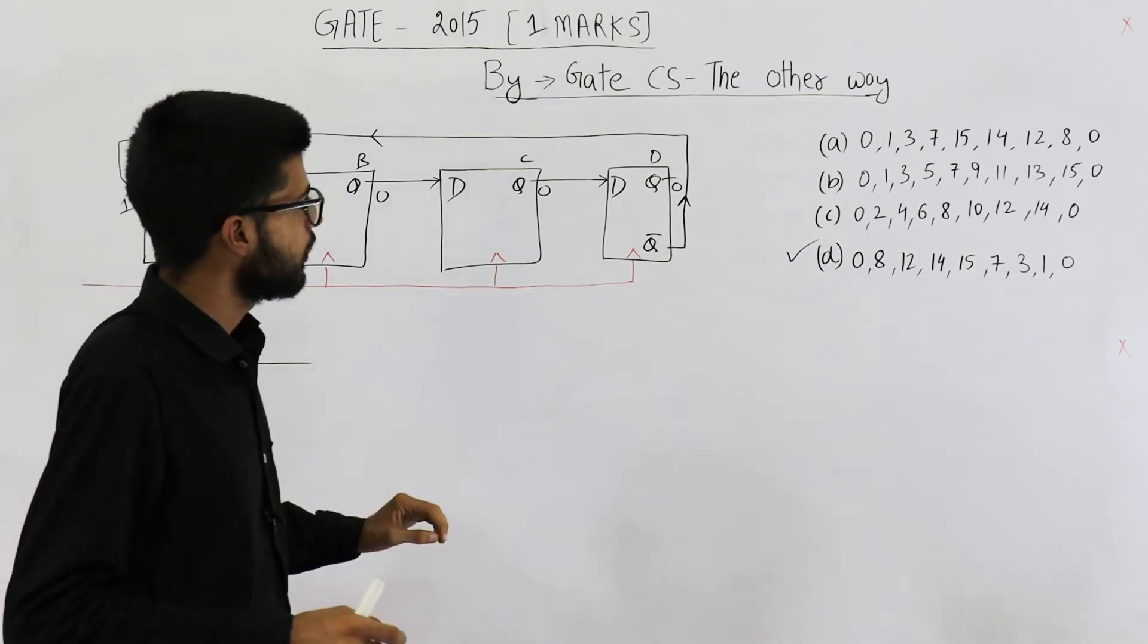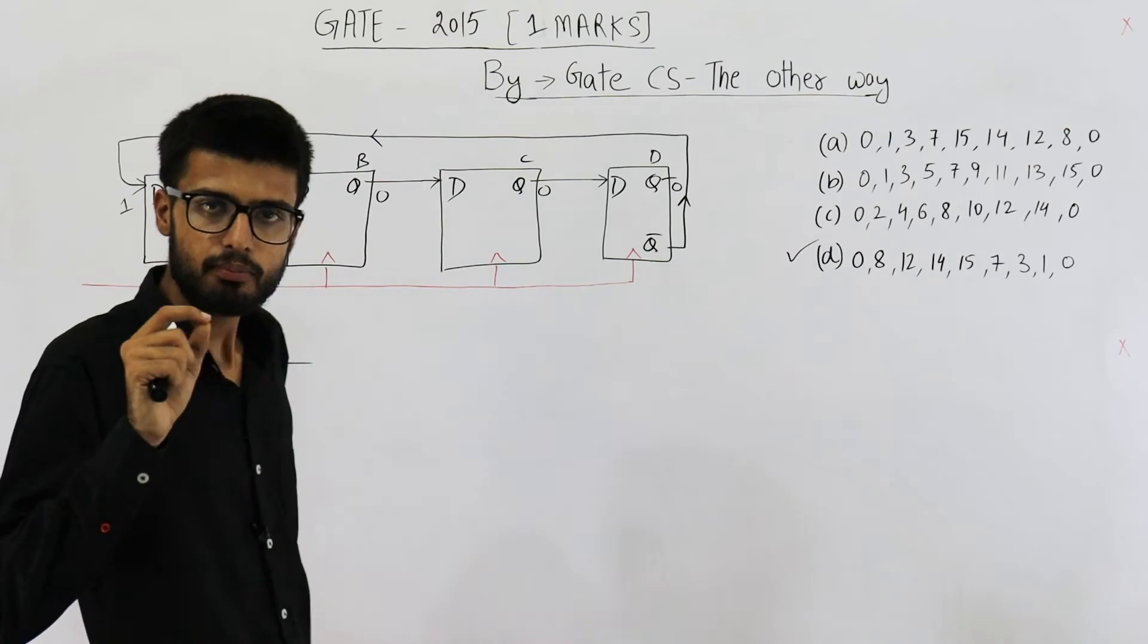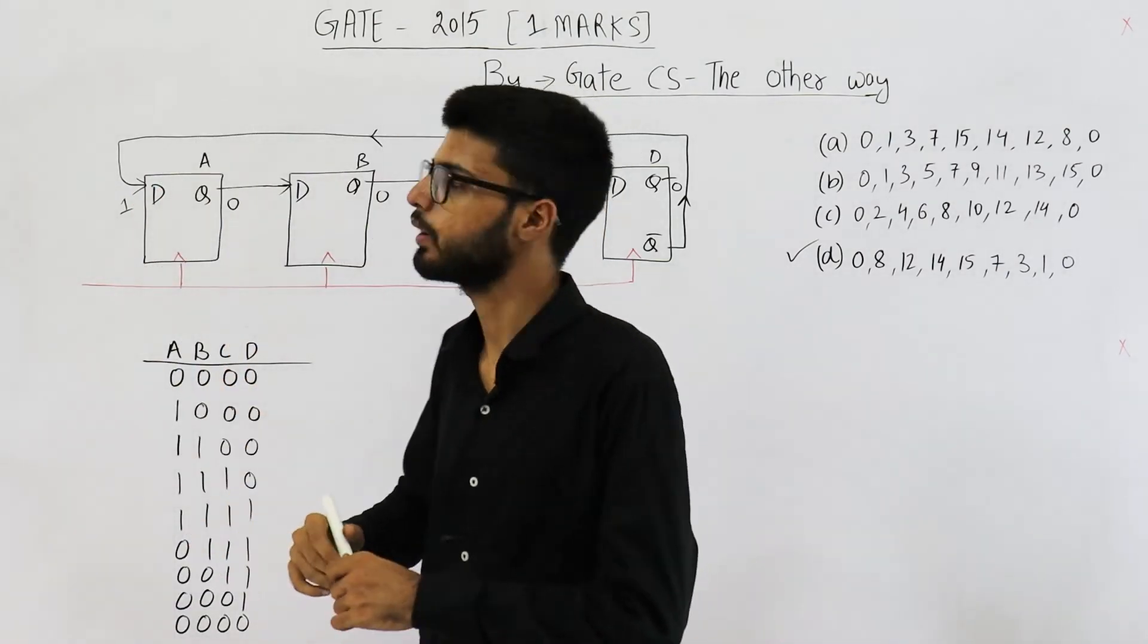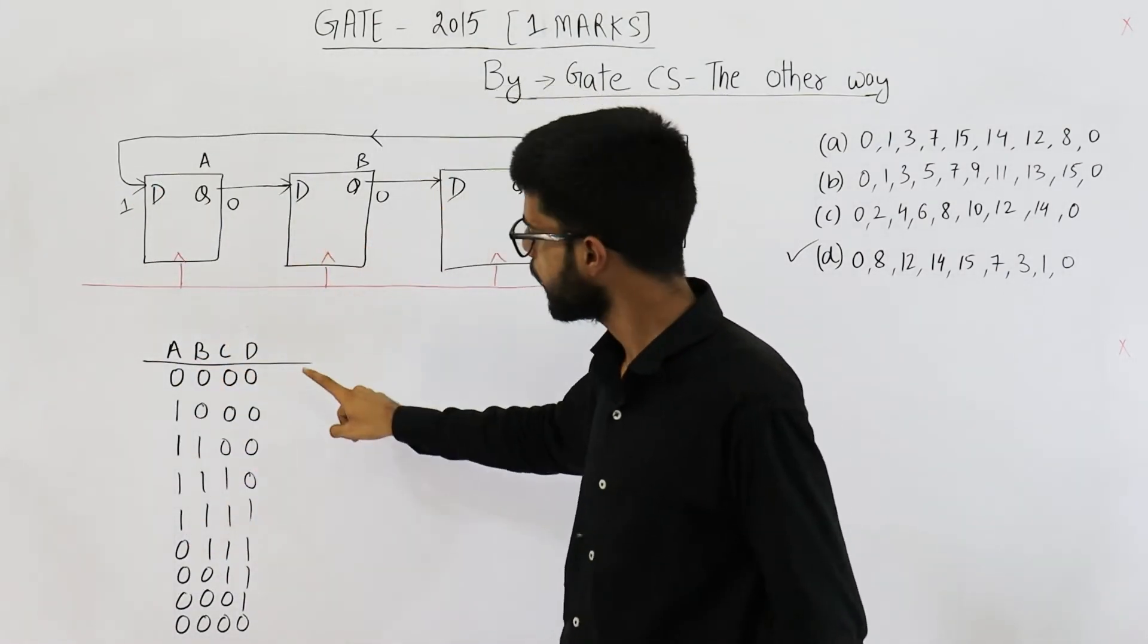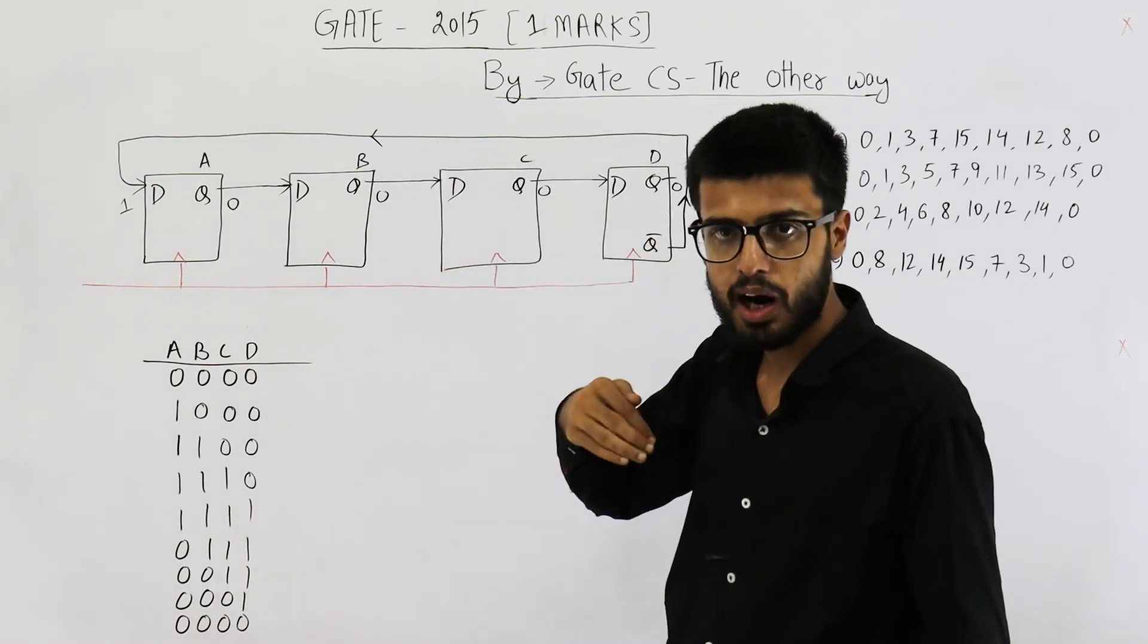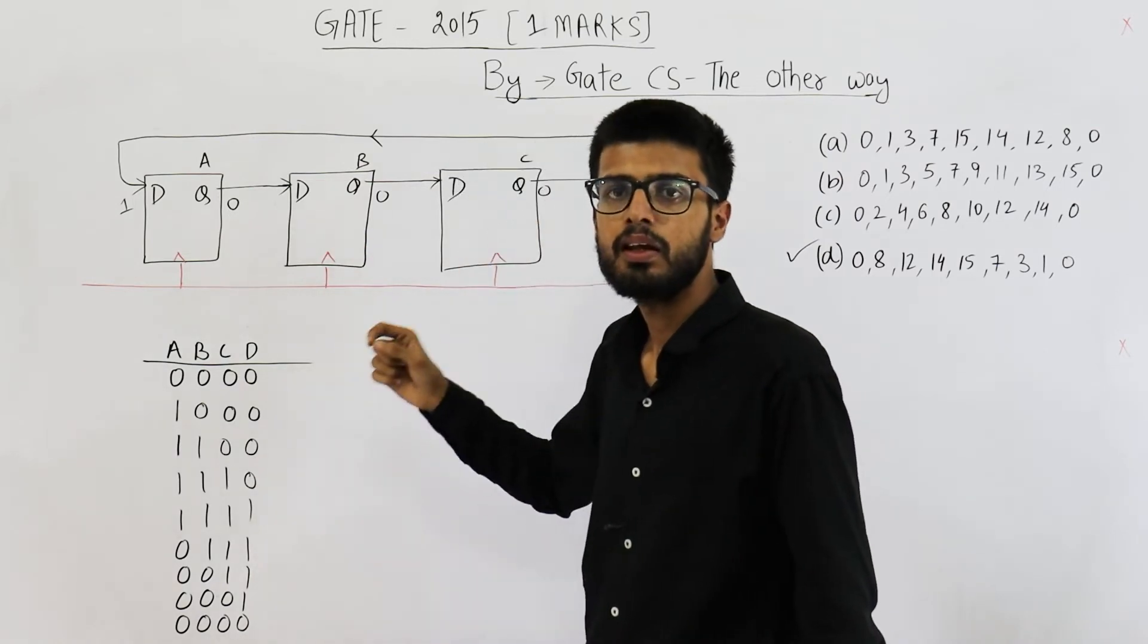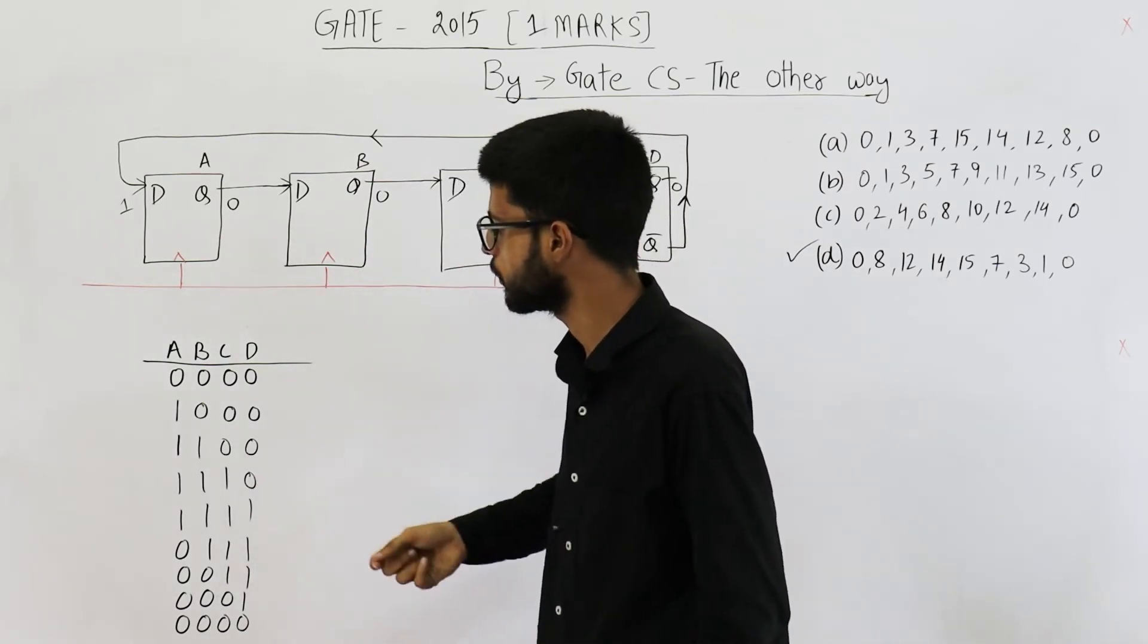But that is not fixed. That is just for the purpose of explanation. In this question, they didn't ever mention that this counter's output will be taken as the MSB. See, whether I take this one as MSB or this one as MSB, the working will remain same. This working will remain as it is. These outputs will remain as it is.